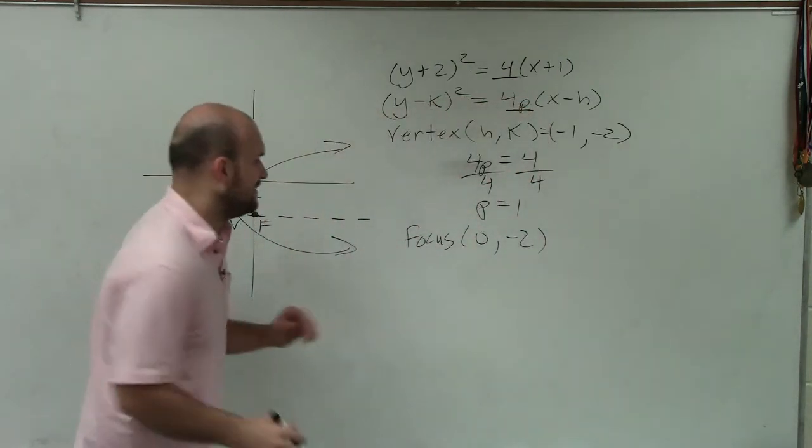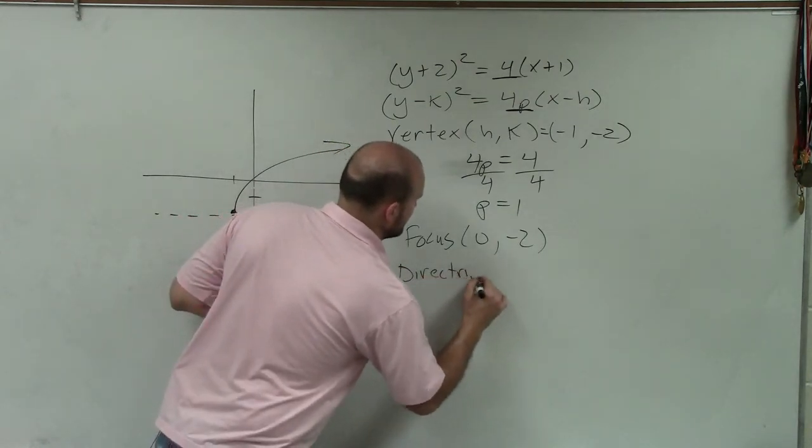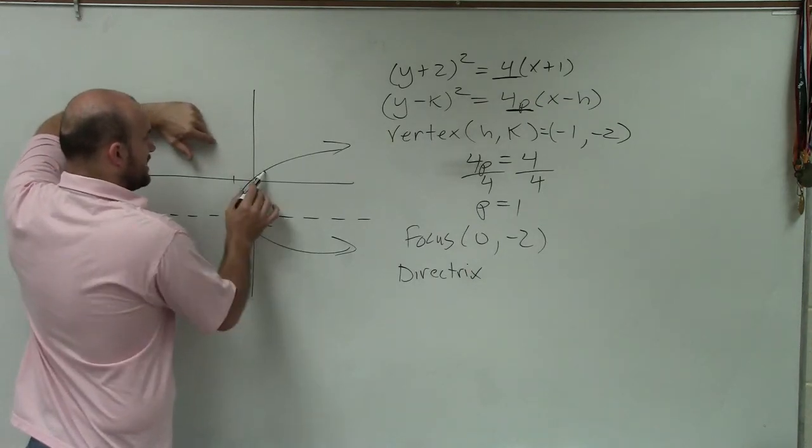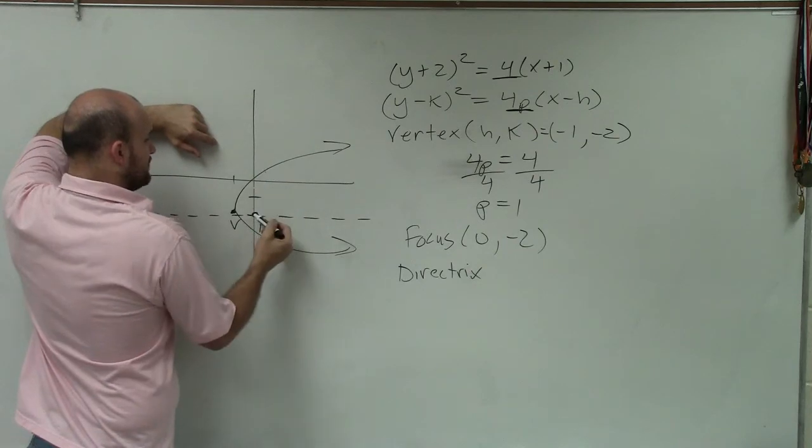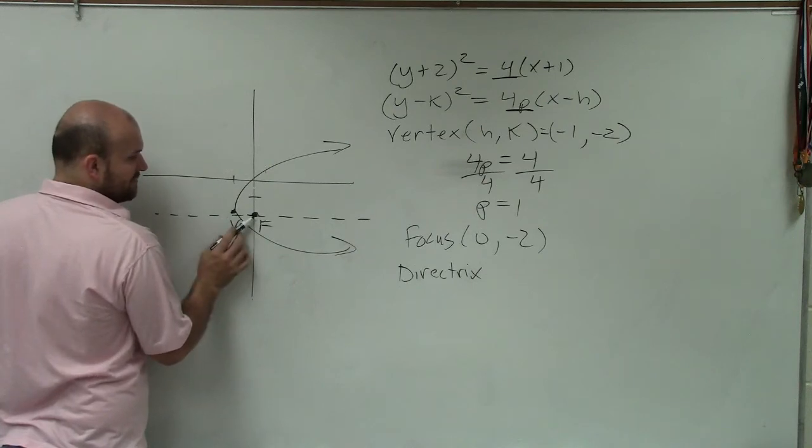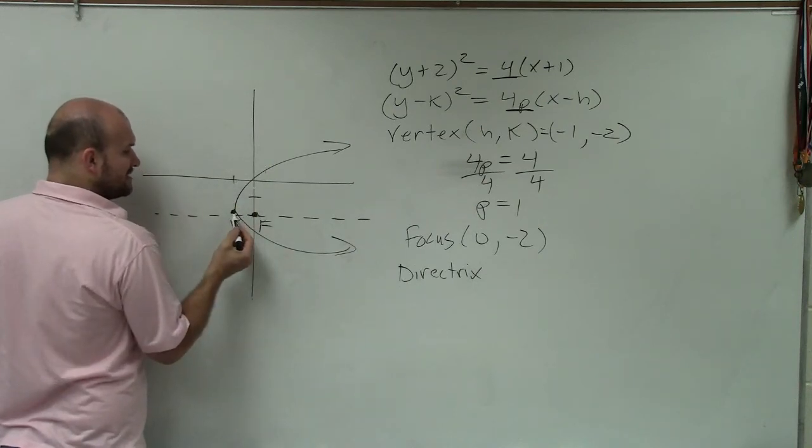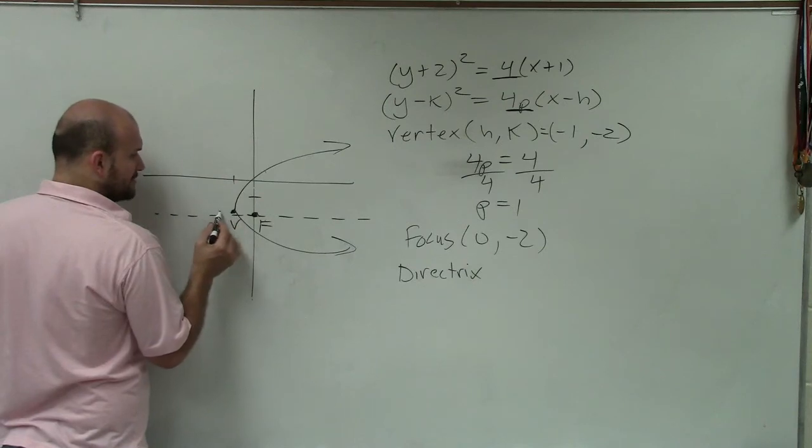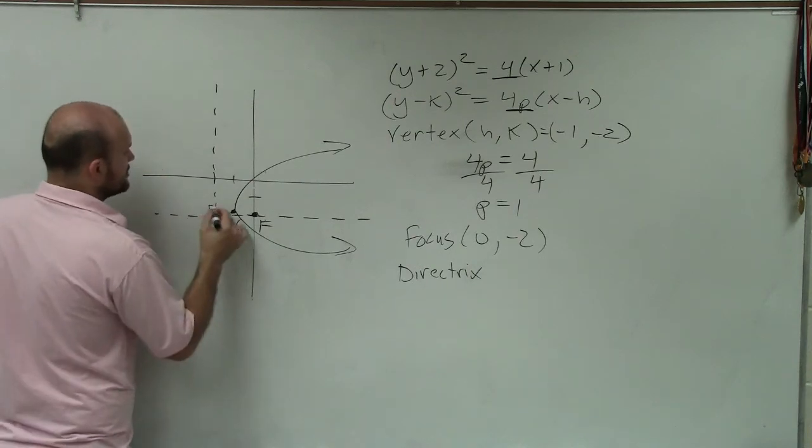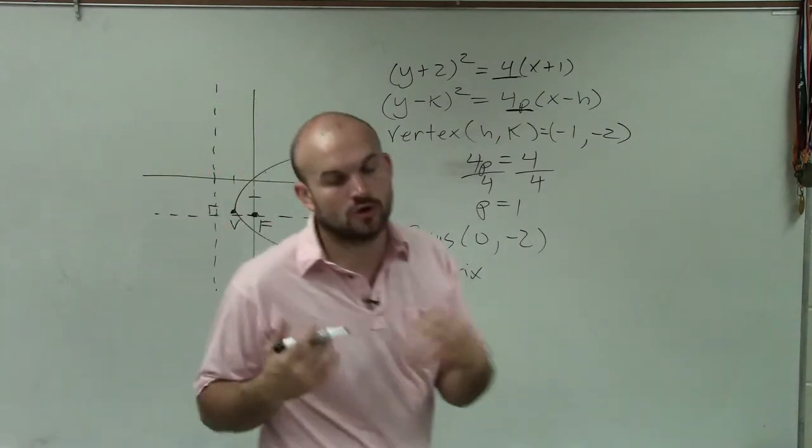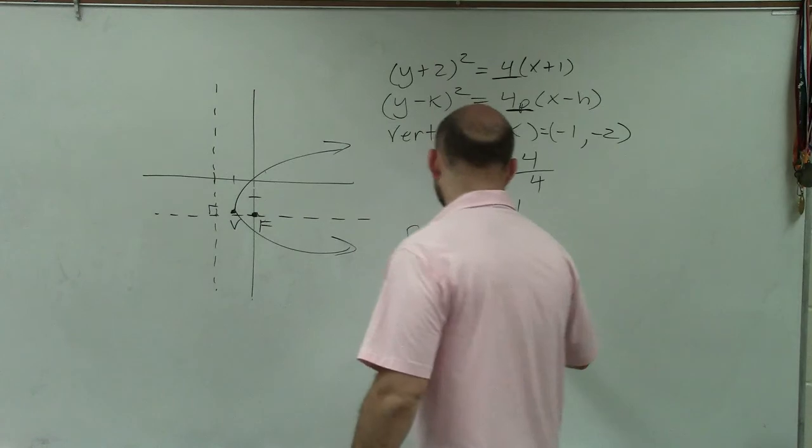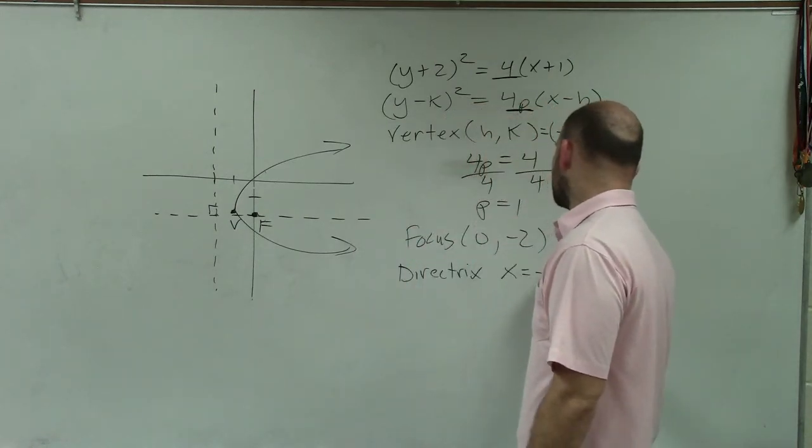Now the last thing I need to do is identify the directrix. The definition of the directrix is that the distance from any point on the parabola to the focus is going to be the exact same as to the directrix. So from my vertex, which is a point on the parabola, to my focus is 1. That means the distance from that vertex to my directrix is also 1, but in the opposite direction. The directrix and the axis of symmetry are perpendicular, so I have this vertical line at negative 2: x equals negative 2.